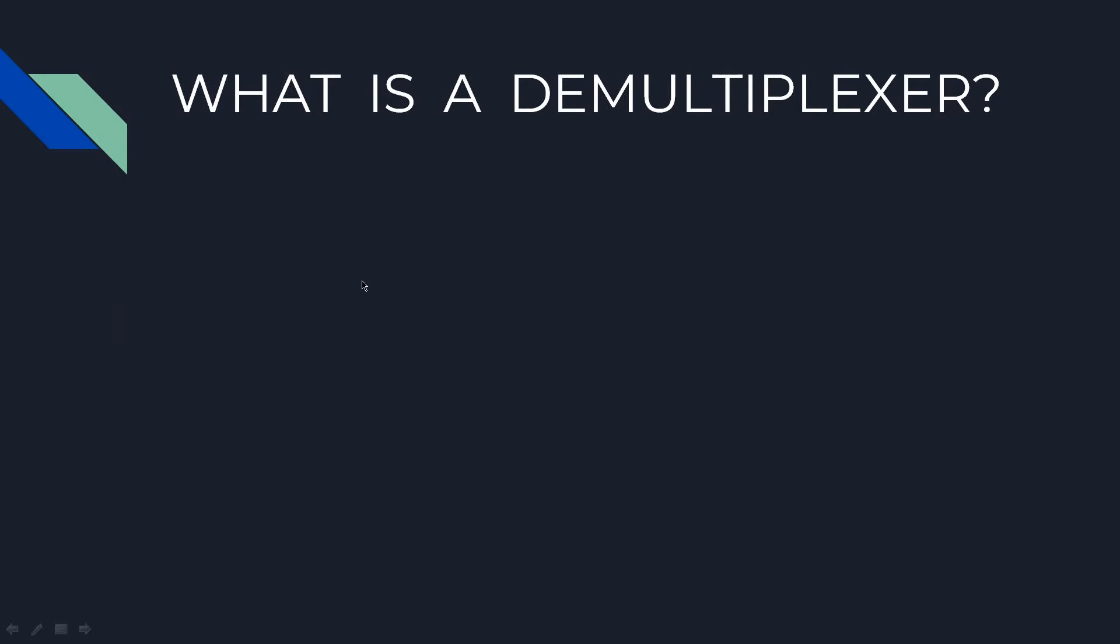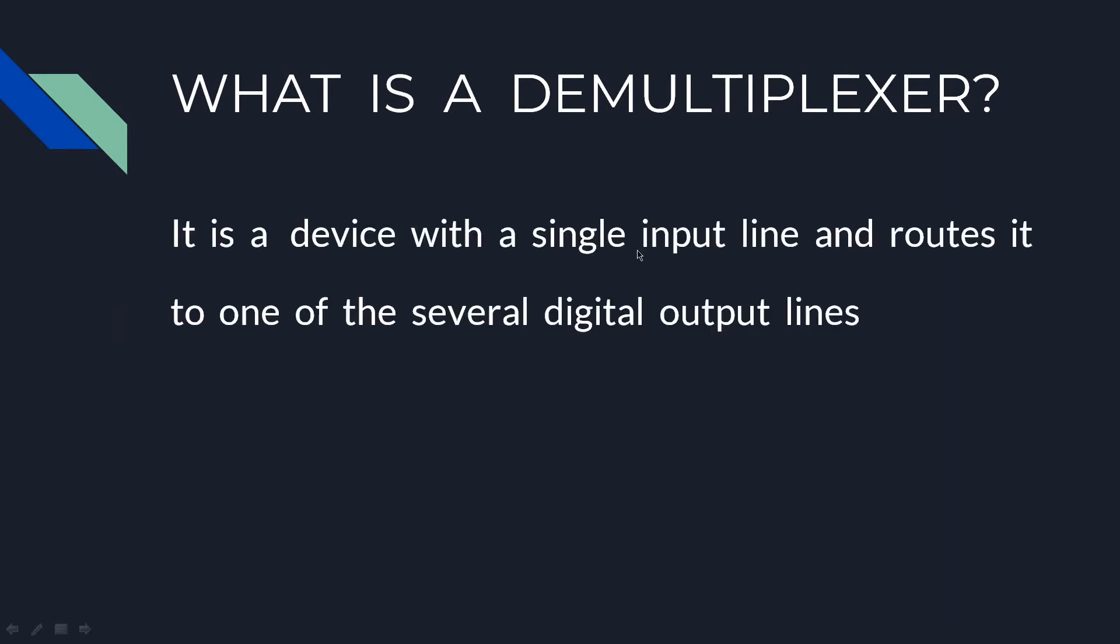What is a demultiplexer? A demultiplexer is a device with a single input line and routes it to one of the several digital output lines.